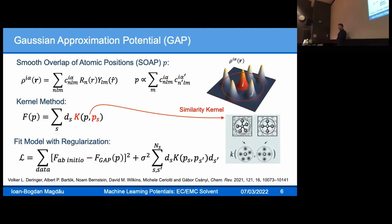Once we have these descriptors, we rely on a kernel method whereby we compare new environments we would like to predict properties for with a set of environments in a database called sparse points through a similarity kernel. Properties are predicted by coefficients that we fit by minimizing the loss function between target and predicted properties with an additional regularization term to avoid overfitting.